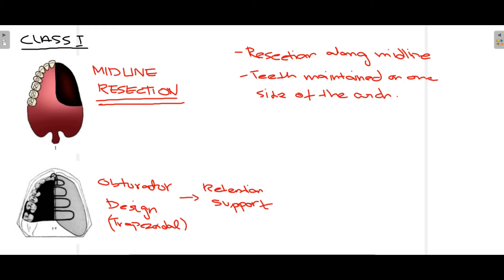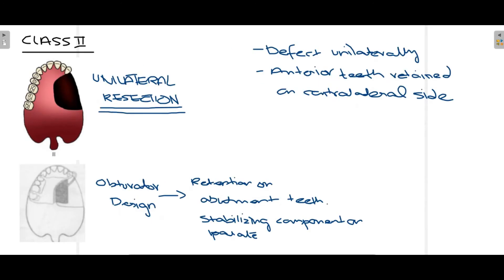When surgery is performed, the tissue that was previously present is removed, and an obturator is designed to fill that space. The obturator must be retentive and supported enough so that it doesn't come off. Class 2 is unilateral resection — only on one side, the entire area is resected. Some teeth anteriorly and on the opposite side posteriorly are remaining. The defect is present unilaterally and anterior teeth are retained on the contralateral side. This is Class 2 of Aramany's maxillectomy defect classification.